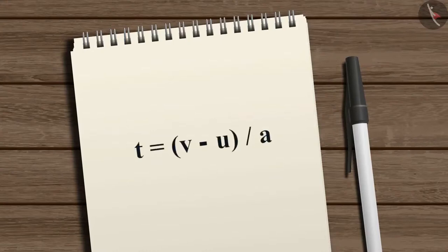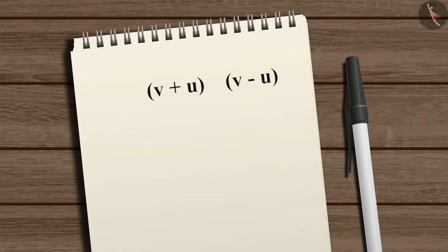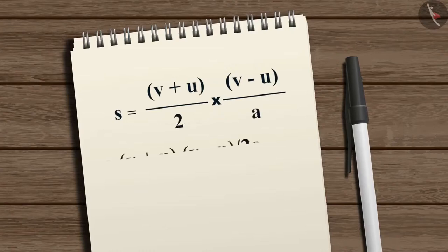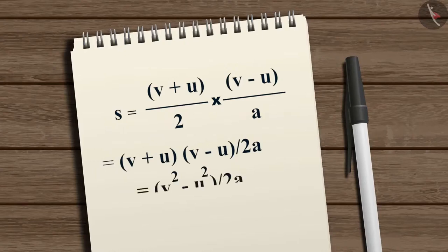From the velocity-time relation, T equals (V minus U) divided by A. Using this value of T, S equals (V plus U) divided by 2, multiplied by (V minus U) divided by A, which equals (V squared minus U squared) divided by 2A. Therefore, 2AS equals V squared minus U squared.